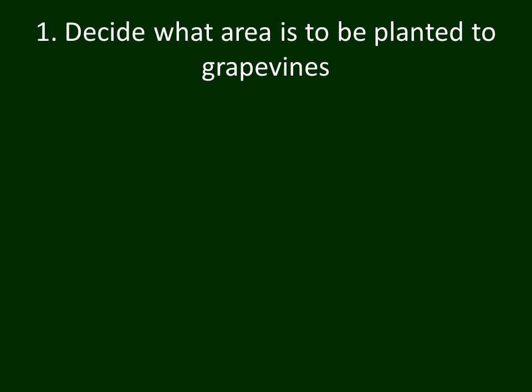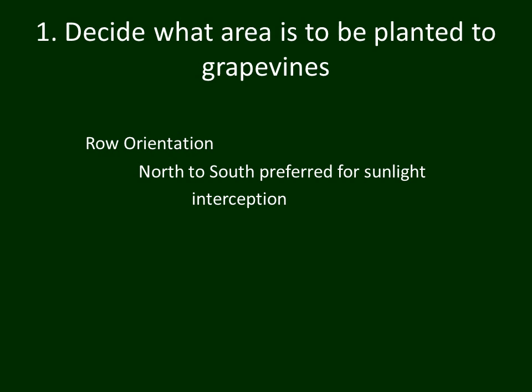The first thing we'll talk about is deciding what area is to be planted to grapevines. The first factor is row orientation — in what direction will you plant your rows of grapevines? The literature is very clear that most of the time the preferred orientation is a north-south orientation for sunlight interception, getting relatively equal amounts of sunlight on the east and west sides of your trellis. If your canopy is not so dense, the north-south orientation is not going to be as important as often stated.